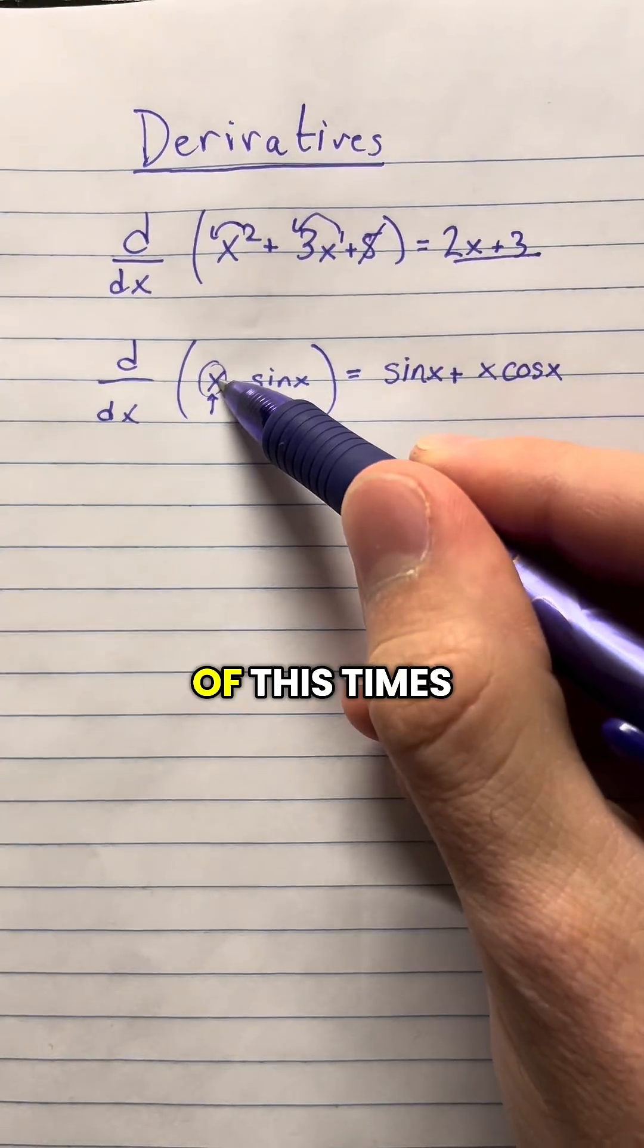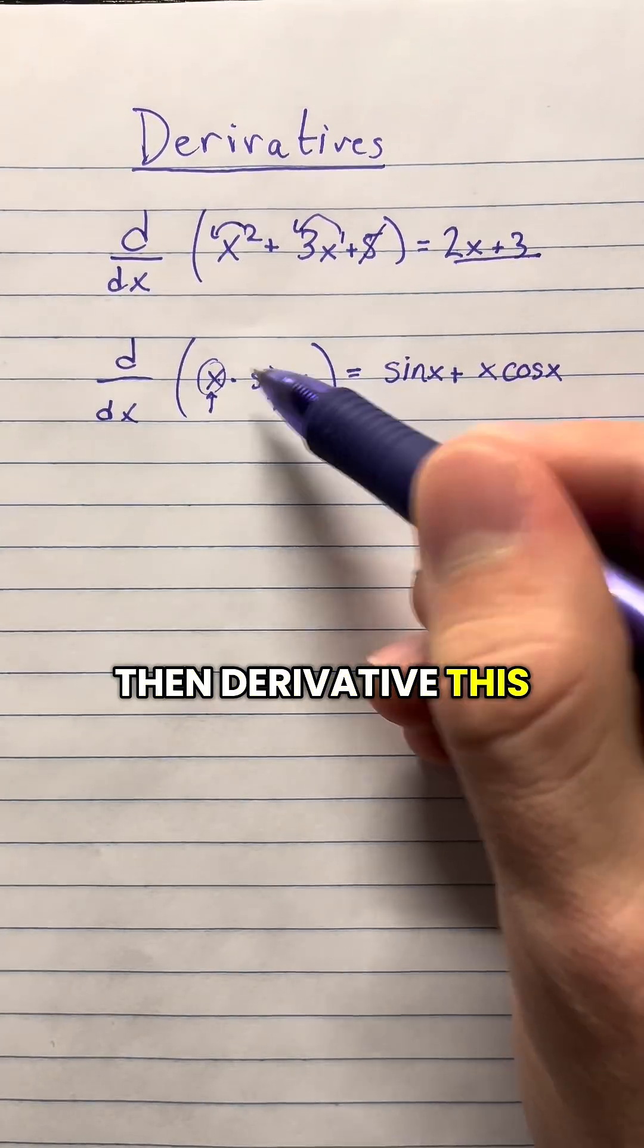Again, remember, the product rule is just derivative of this times this, then derivative of this times this.